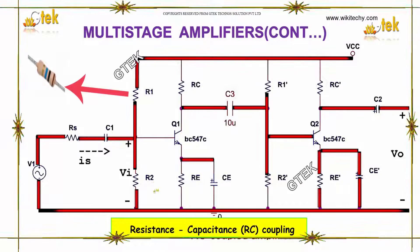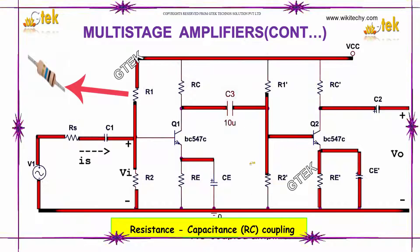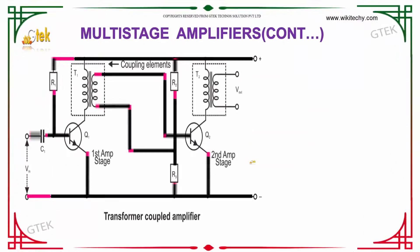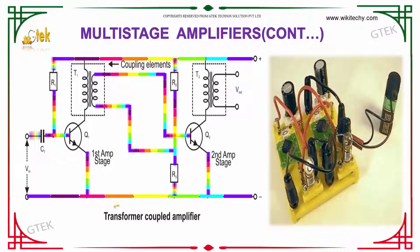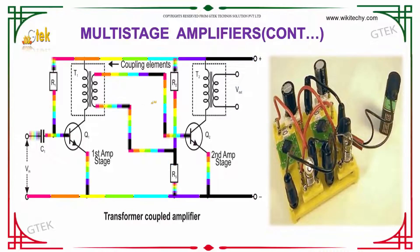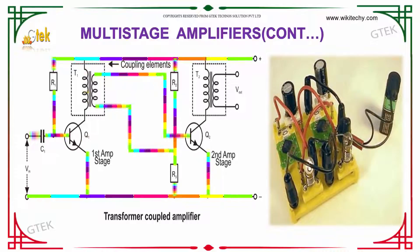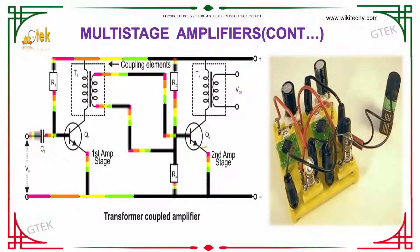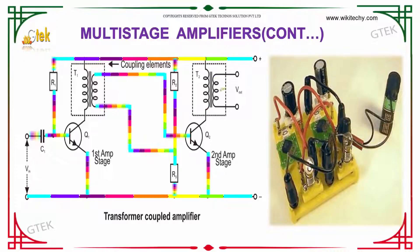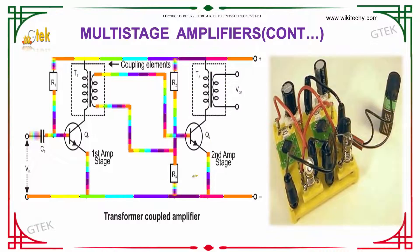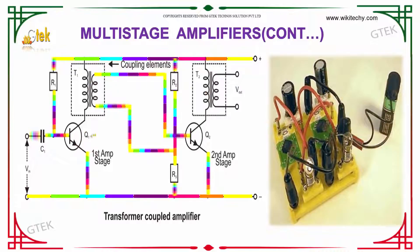Here is the resistance-capacitor coupling. For transformer coupling, here is the first amplifier with a transformer, coupled to another amplifier with another transformer. This is your transformer coupled amplifier.